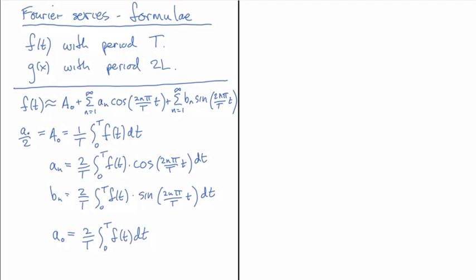So we have 2 over T now integral from 0 to T f(t) dt. You could choose to use capital A0 if you prefer to memorize that formula, or if you want to have them all be a little bit more comparable, then you could use this formula here.